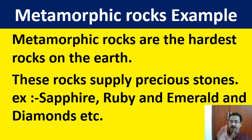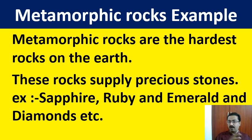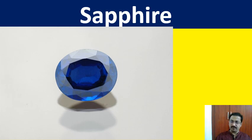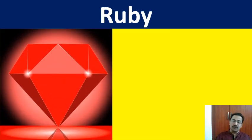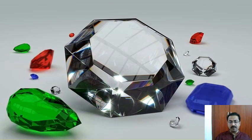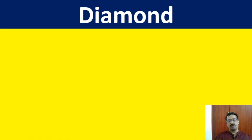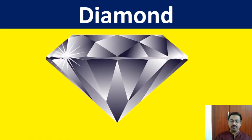Metamorphic rocks are the hardest rocks on earth. Examples include sapphire, ruby, emerald, and diamond — all costly precious stones with very high market value. A picture of sapphire, ruby, and emerald are shown — these are all metamorphic rocks. Diamond is formed due to heavy temperature and high pressure inside the earth.